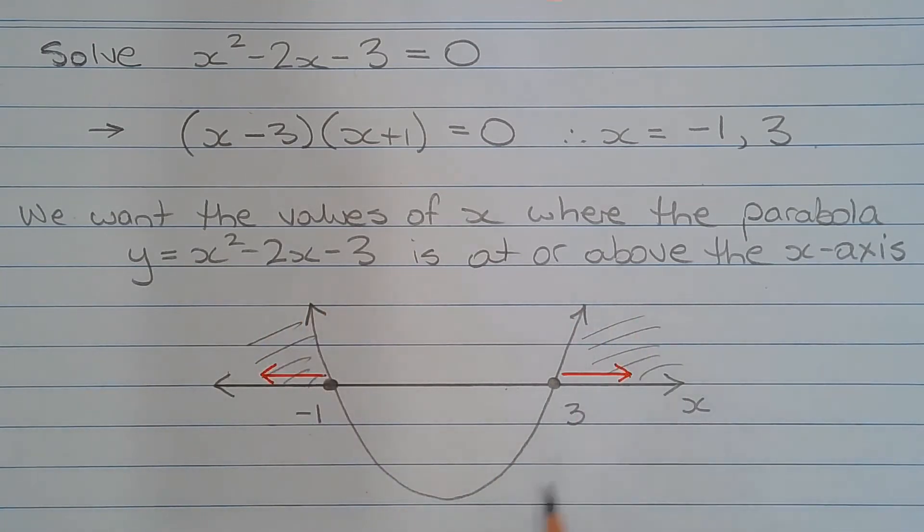So here is a sketch that represents the parabola y equals x squared minus 2x minus 3 intersecting with the x-axis at x equals negative 1 and 3.